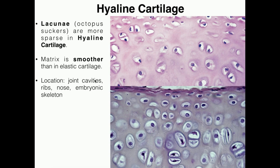Hyaline cartilage is found in your joint cavities. Most joints — with the main exception being the spine, your vertebral column — have all the bones that articulate covered in articular cartilage, and its specific type is hyaline cartilage. For example, the meniscus in your knee is actually hyaline cartilage. You also have hyaline cartilage in the ribs as costal cartilage, in the nose, and whenever you develop in utero you actually start out with an embryonic skeleton made of hyaline cartilage, which then ossifies into bone over time.